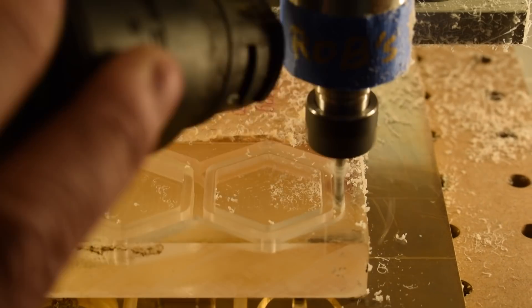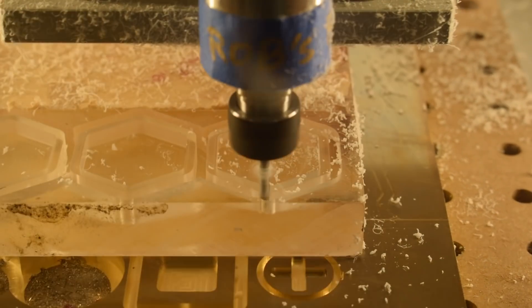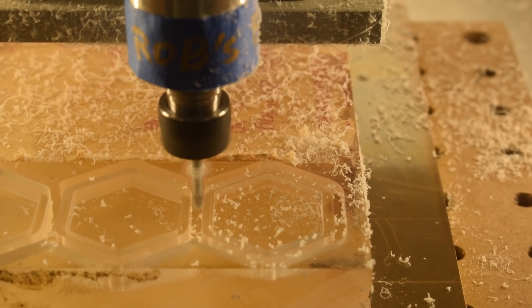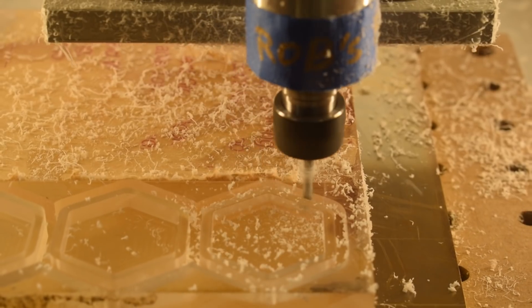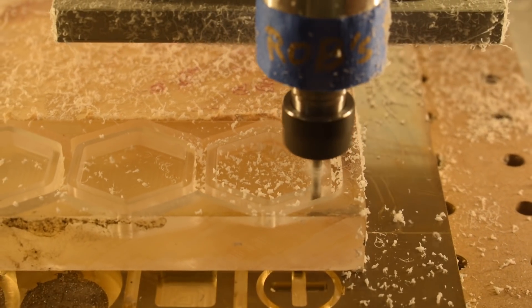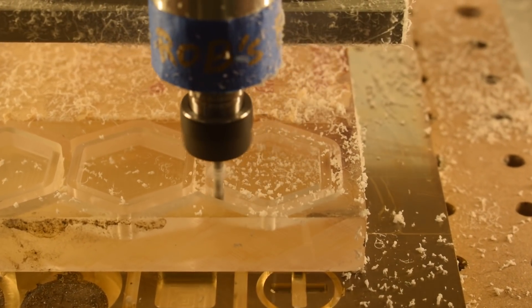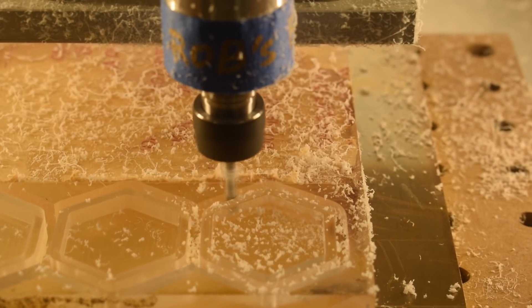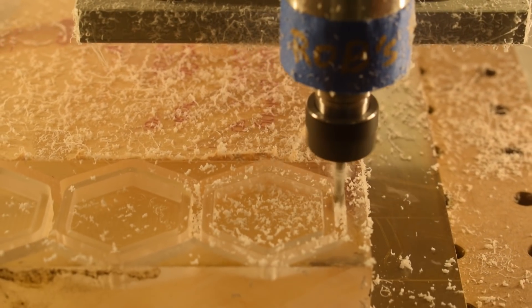Especially with shallow step downs like this, you get long strands of plastic that can wrap themselves around the cutter, and before you know it, your end mill is an acrylic lollipop. So a little compressed air or vacuum can go a long way to keeping you humming along. You can even pause the machine to do a more thorough cleaning as your cuts get deeper.